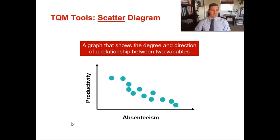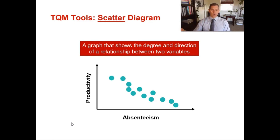For example, productivity goes down as absenteeism increases — that makes a lot of sense. Similarly, the more time students spend studying and doing practice problems, the higher their exam scores will be. A scatter diagram shows the degree and direction of a relationship between two variables. If there isn't a clear linear relationship, those two variables probably are not correlated.